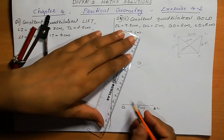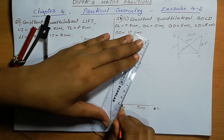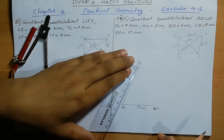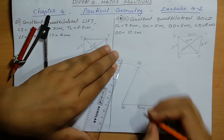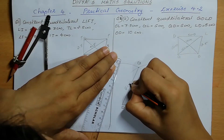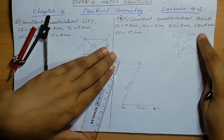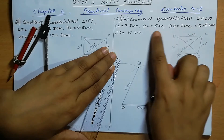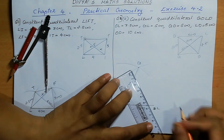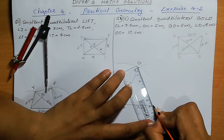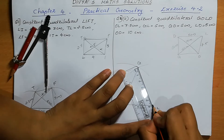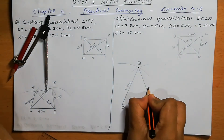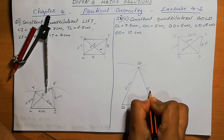Now we can join. DG is 6 cm — we can verify that DG is 6 cm. Next, LG is 6 cm — we can verify here also. Yes, this is exactly 6 cm. That means our construction is exactly correct. We can mark it as 6 cm.